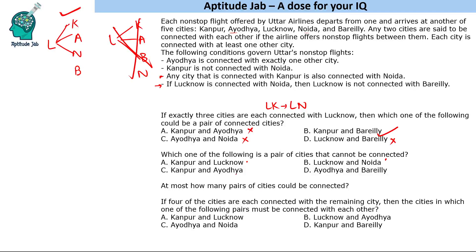Next option: Kanpur and Ayodhya. Can Kanpur and Ayodhya be connected? The third condition says any city that is connected with Kanpur is also connected with Noida. So if Kanpur and Ayodhya are connected, then Ayodhya and Noida should also be connected. But Ayodhya is connected with exactly one other city, so it cannot be connected with both Kanpur and Noida simultaneously. That is why Kanpur and Ayodhya cannot be connected — this is the answer.